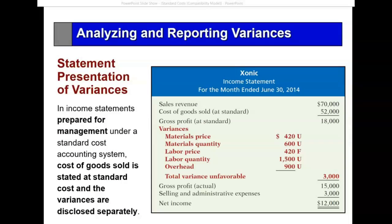Lastly, when it comes to reporting on the income statement — keep in mind this company is manufacturing products based on standard costs. So at the end of the year, they know the actual revenue from units sold: $70,000. But the cost of goods sold is the standard: $52,000. That gives a gross profit of $18,000. We must now adjust that gross profit by the variances.